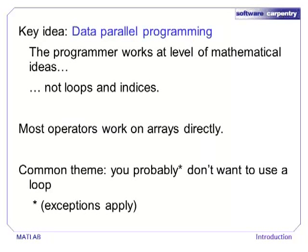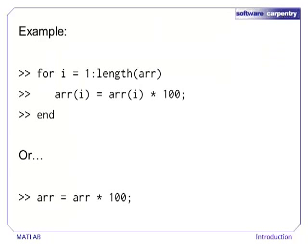Throughout this lecture series, we will return to the idea of data parallel programming. In data parallel programs, the programmer is encouraged to think at a high level of abstraction. Implementing algorithms, which typically takes a lot of loops and indices, is handled by the programming language. This means that code is easier to write and debug, and typically, data parallel programs are much faster. This simple example demonstrates the difference between a typical program that emphasizes loops and a data parallel implementation of the same thing. The data parallel approach places more emphasis on the objective of the operation than on the implementation of the objective. We will see numerous examples of how data parallel thinking can simplify and speed up your code.